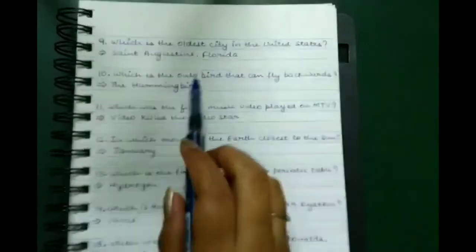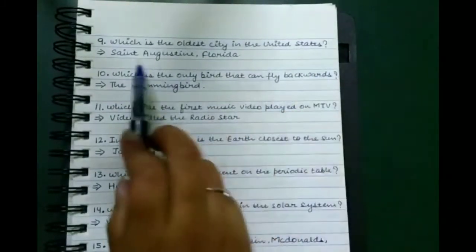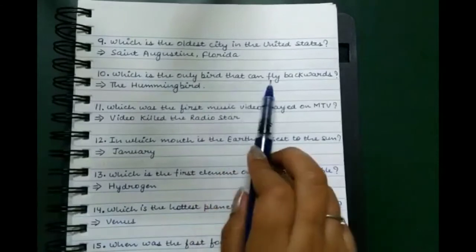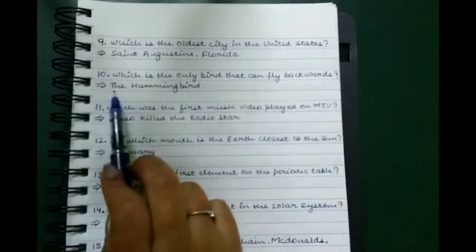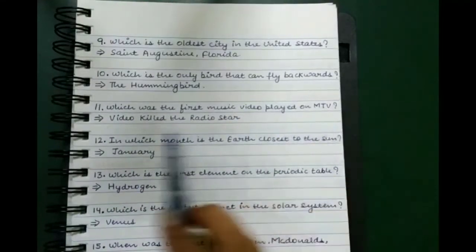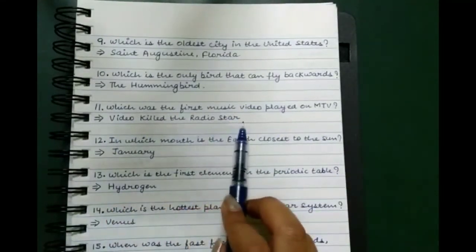Which is the oldest city in the United States? Saint Augustine, Florida. Which is the only bird that can fly backwards? The hummingbird.